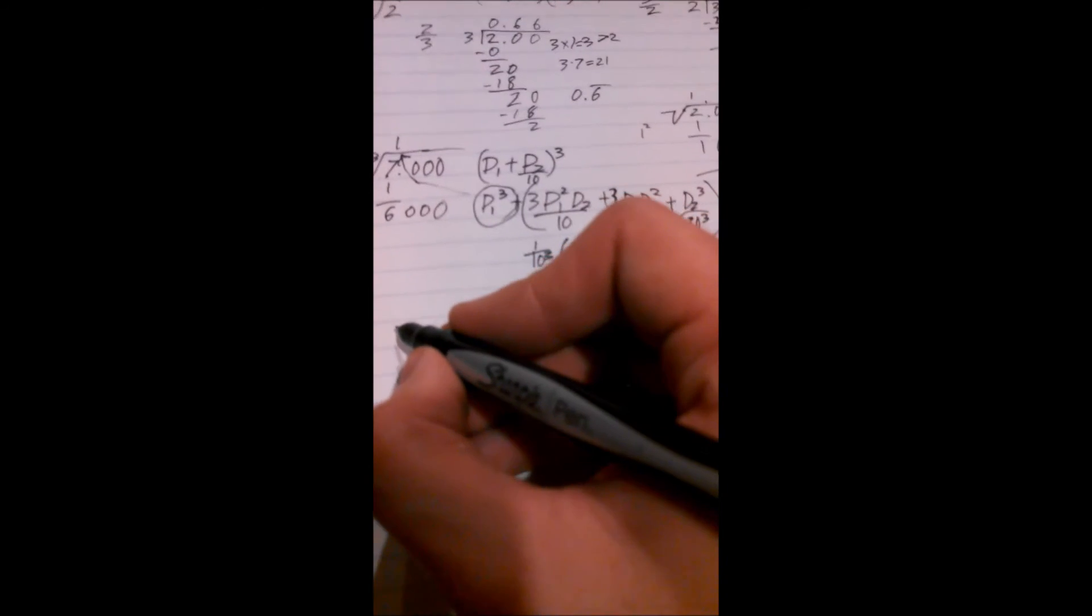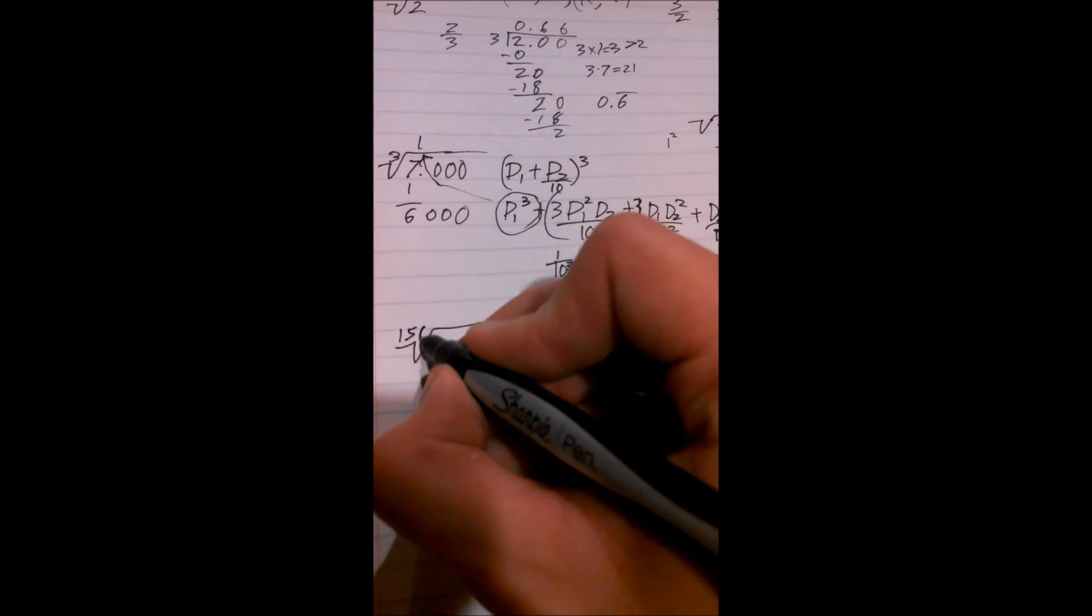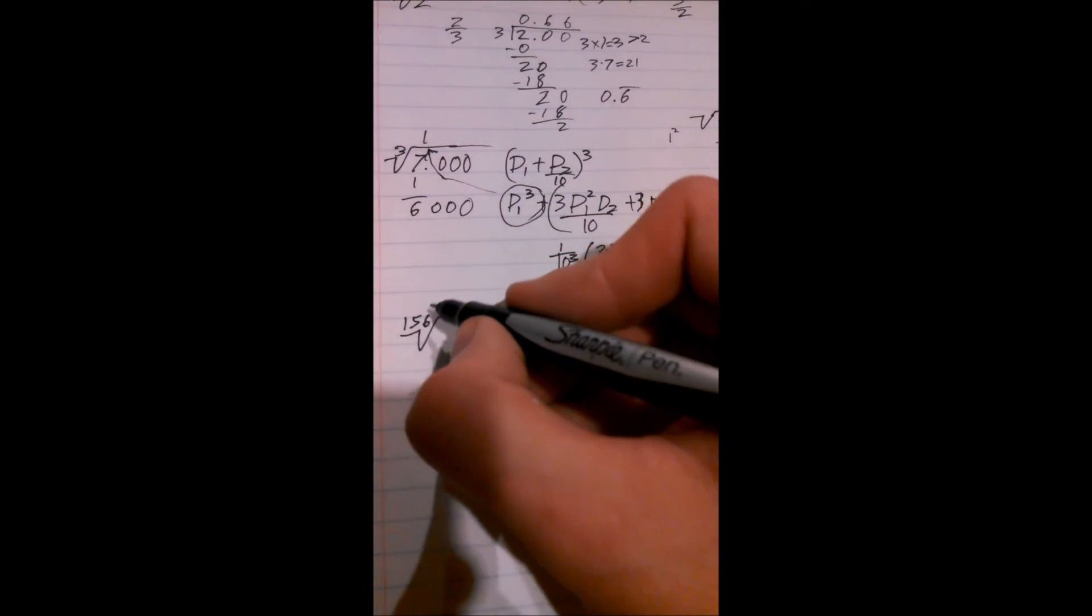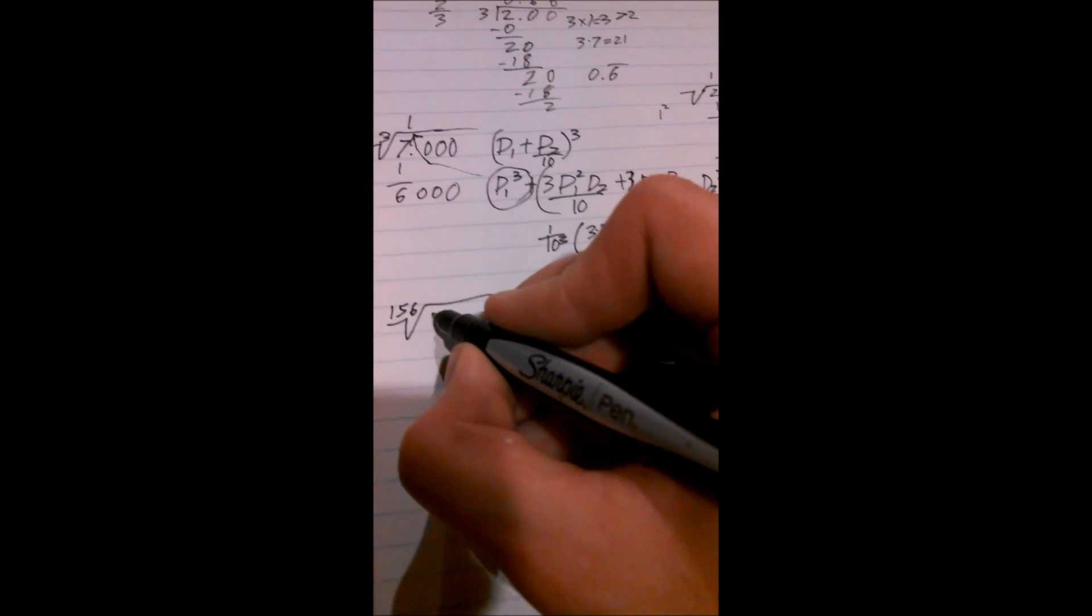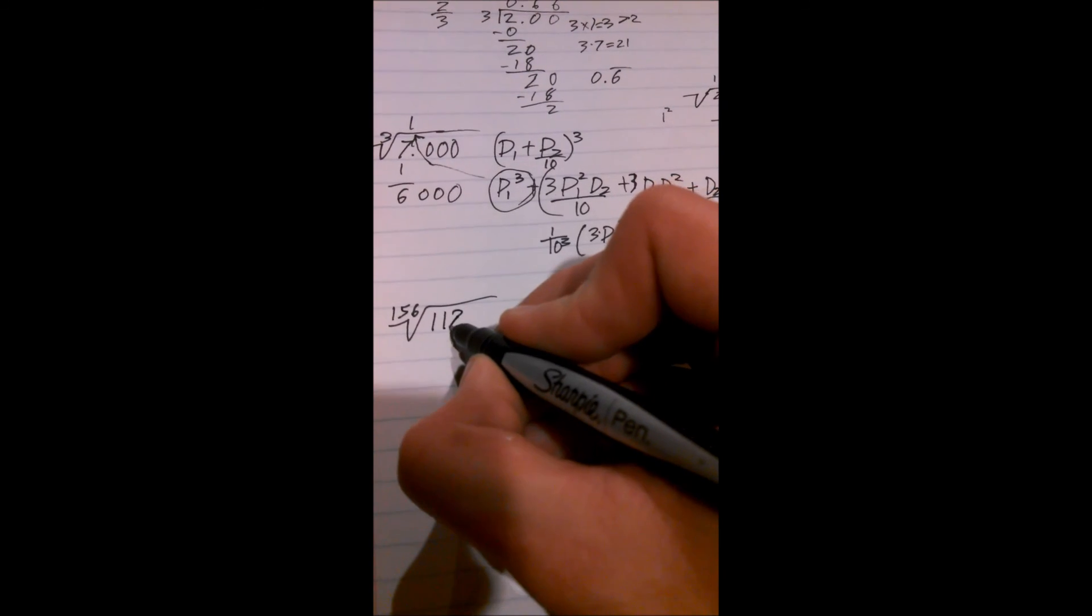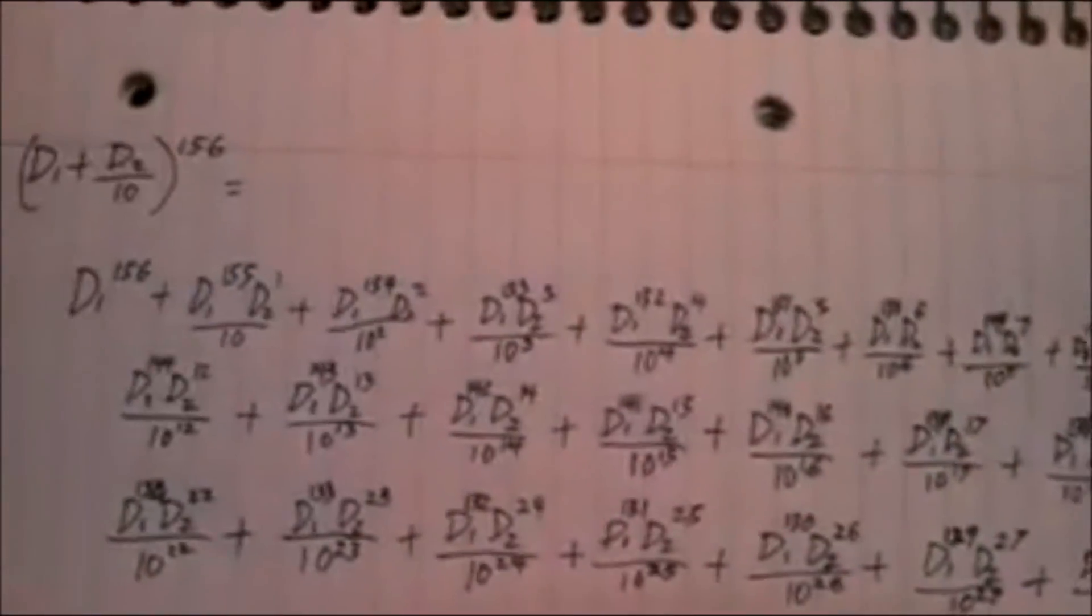And if you were to do some large number like the nth root where n is equal to 156, that's doable, just some random number you could do that. You would have to solve an equation with 156 terms and I only got to 31 terms. And I forgot to put in the leading number there. So you could do it but it would get complicated very quickly.